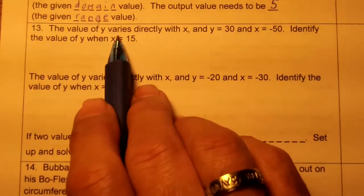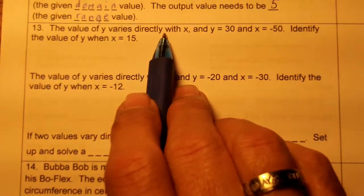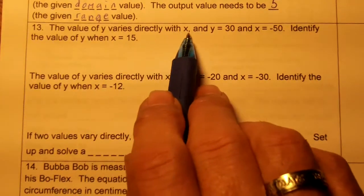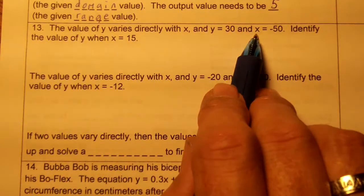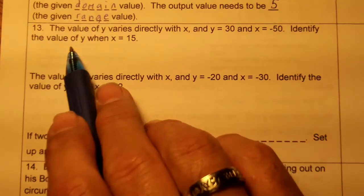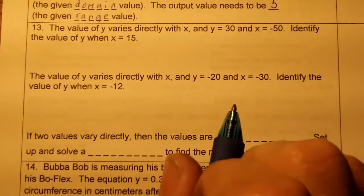Number 13, the values of y varies directly with x. That means it's going to be proportional. And y equals 30 and x equals negative 50. Identify the value of y when x is 15.